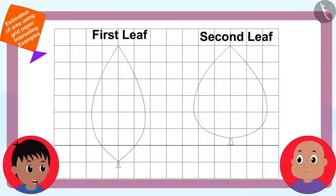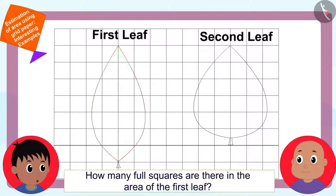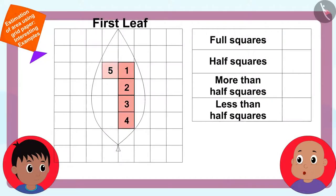It is very easy. Can you tell me how many full squares are there in the area of the first leaf? Raju asked Bablu. Eight squares. Bablu quickly counted.